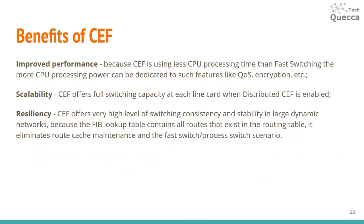Let's point out a few benefits of CEF. The first is improved performance: because CEF uses less CPU processing time than fast switching, more CPU power can be dedicated to features like QoS or encryption. Second is scalability: CEF offers full switching capacity at each line card when distributed CEF is enabled. Third is resiliency: CEF offers a very high level of switching consistency and stability in large dynamic networks, because the FIB lookup table contains all routes that exist in the routing table, eliminating route cache maintenance and fast-switch or process-switch scenarios.